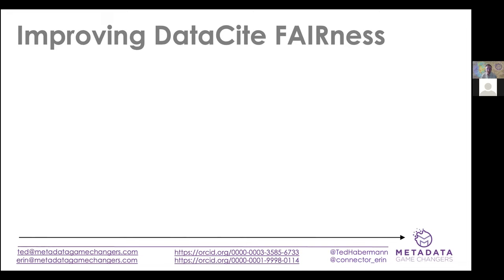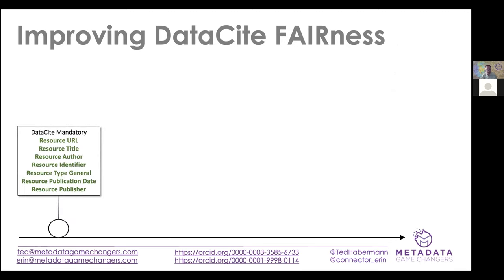When I talk about improving Datacite fairness, that means starting out where essentially all records in Datacite have the mandatory fields. Some haven't been mandatory since the beginning — specifically resource type general — so some records don't have those. The mandatory fields were selected for two use cases: identification, giving a DOI to something, and citation, being able to support a typical citation like a journal article citation to a dataset.